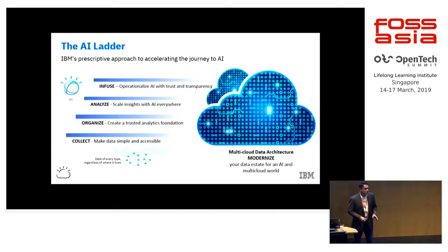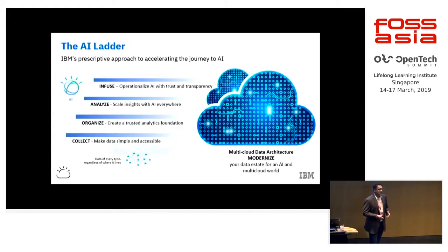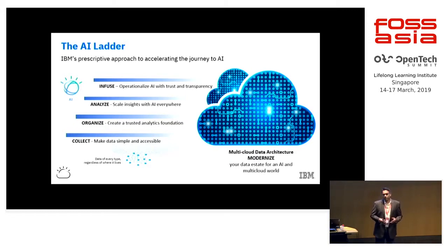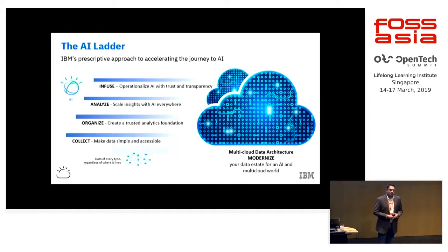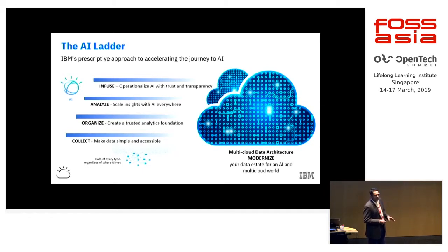I want to talk about IBM and IBM's contribution to AI. If there's one thing you can take from this talk, I hope I can show you how IBM is essentially synonymous with open source and its adoption for the cloud, for data, and for AI. Given all of the powerful open source capabilities, particularly in the artificial intelligence landscape, what does IBM stand for? Why do clients need IBM to participate in this landscape? One way to clearly depict that is through what we refer to as the AI ladder.